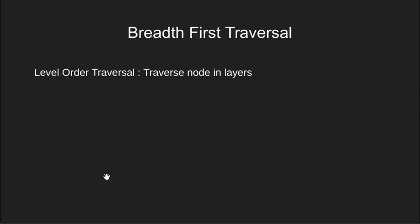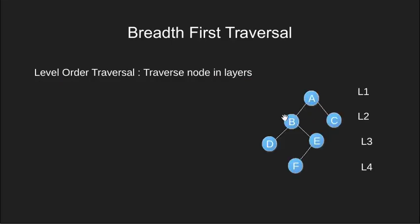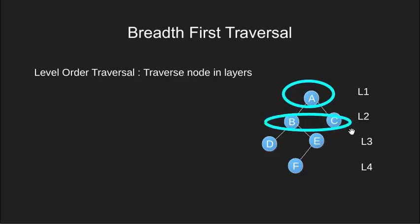First let's have a look at breadth first traversal. In trees we also call it level order traversal. We have done a separate video on level order traversal which is quite in depth and you can refer to it. Level order traversal refers to traversing the tree nodes in a level by level fashion. In this tree, if we start from node A, the order of traversal would be: first we visit layer 1, then layer 2, then layer 3, and finally the last layer 4. So our final order will look like this.